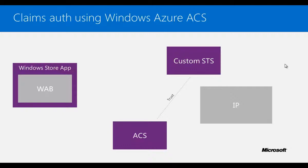Access Control Service is similar to Azure Mobile Services, which can authenticate users against online providers like Yahoo, Google, Facebook, and Microsoft account. Azure Access Control Service can also be configured to work with third-party identity providers like ADFS or even your own custom STS. In the slide, we can see that there is a custom STS. The role of this custom STS is to extract the token from Azure Access Control Service and repackage it in the format that Web Authentication Broker understands. There is also a trust created between Access Control Service and the custom STS, which eliminates the need for the Windows Store application to be registered in Access Control Service.